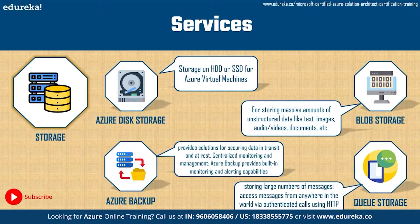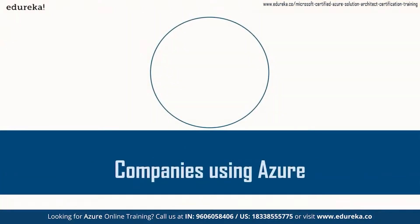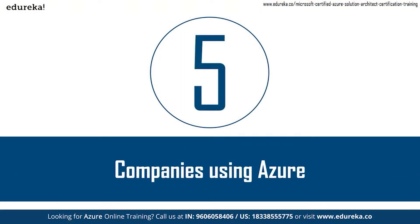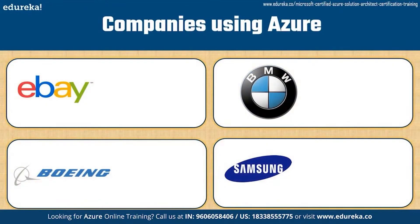The storage category provides scalable cloud storage for structured and unstructured data, and also supports big data projects, persistent storage, and archival storage. Similarly, there are 19 more categories that provide services catering to all needs of any organization. That brings us to our next section: companies using Azure. Hundreds of big companies use Azure — let's look at a few that each use Azure for a different purpose.